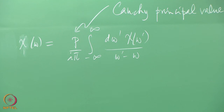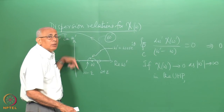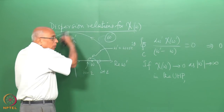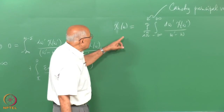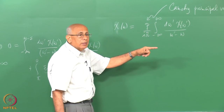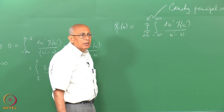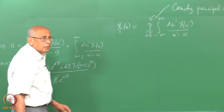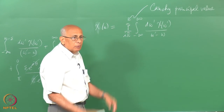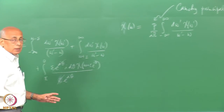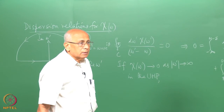Notice what has happened: we made an excursion from real values of omega to complex values, but we are back to the real axis because that contribution went away. We have succeeded in expressing the susceptibility at any real frequency as an integral over all other frequencies, except for an infinitesimal interval about that frequency. This sort of thing is called a dispersion relation. There are no complex frequencies here — it is completely physical. All we have to do now is take real and imaginary parts.